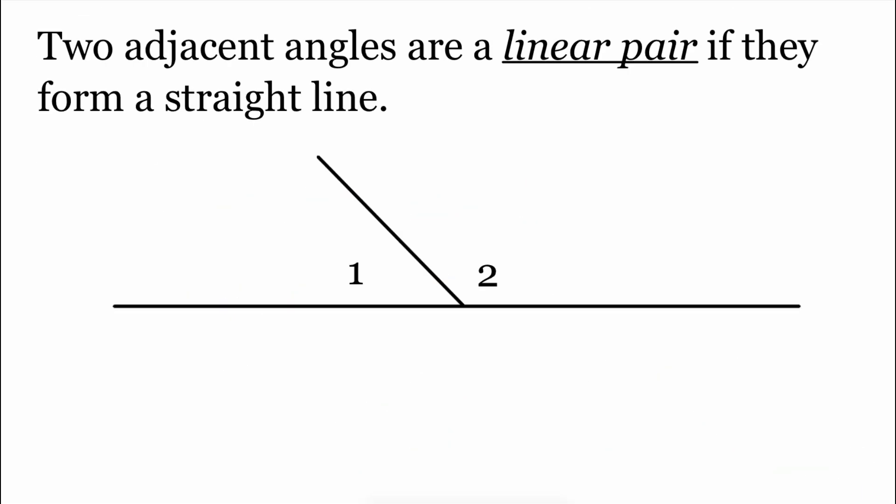Another pair of angles we'll be dealing with are called a linear pair. A linear pair happens when we have two adjacent angles that form a straight line. This would be adjacent supplementary angles, because a straight line — or straight angle — has a measure of 180 degrees.